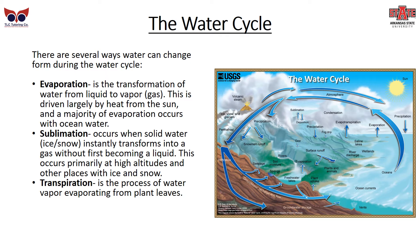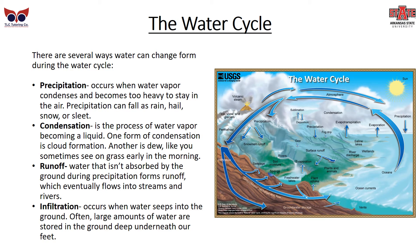Transpiration is the process of water vapor evaporating from plant leaves. For more on this, review Module 5. Precipitation occurs when water vapor condenses and becomes too heavy to stay in the air. Precipitation can fall as rain, hail, snow, or sleet.